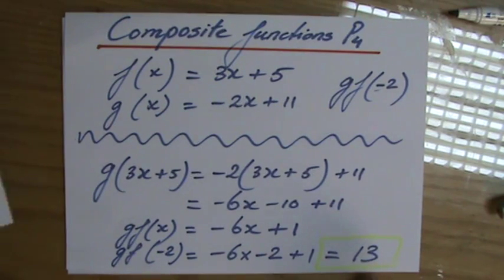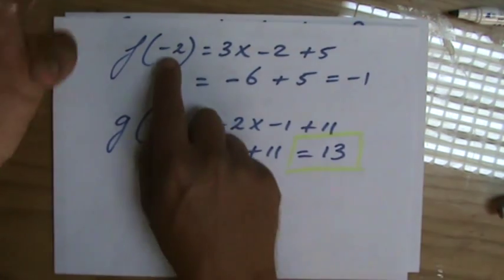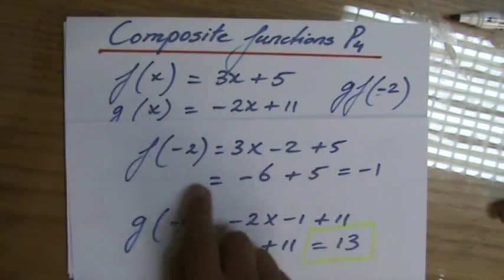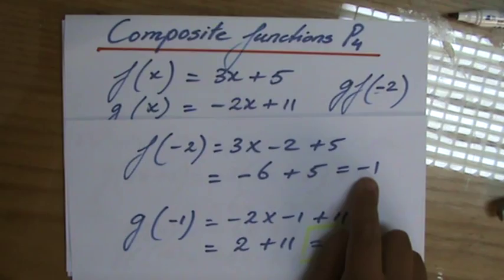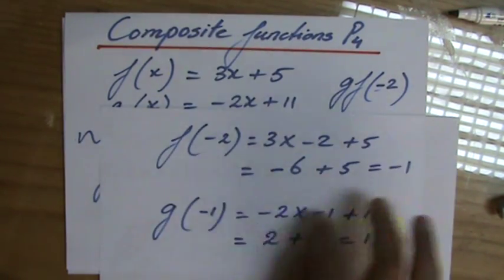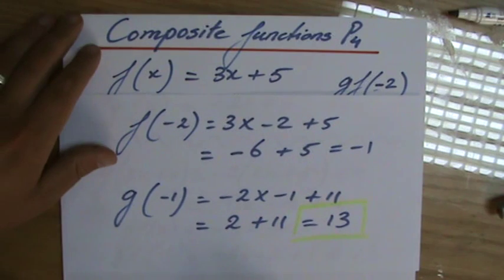The other way of doing it is to plug in the minus 2 into f first, then you get a numerical value, yeah, and that number you plug into g then, and then you get the same answer, in this case 13.